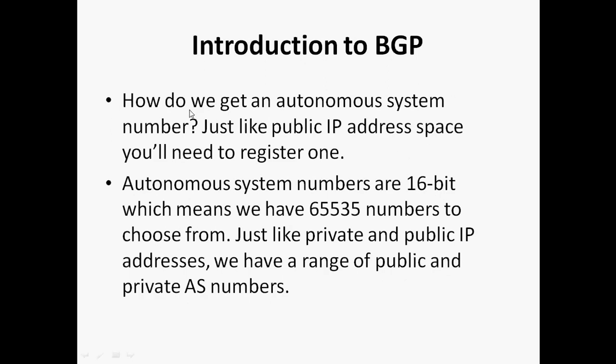How do we get an autonomous system number? Same as with public IP addresses — we have to register with IANA or an RIR to purchase an autonomous system number. Autonomous system numbers were previously 16-bit, with a range of 0 to 65,535. Nowadays, autonomous system numbers are 32-bit. Similar to private and public IP addresses, autonomous system numbers also have public ASNs and private ASNs, and we have a range of public and private ASNs.